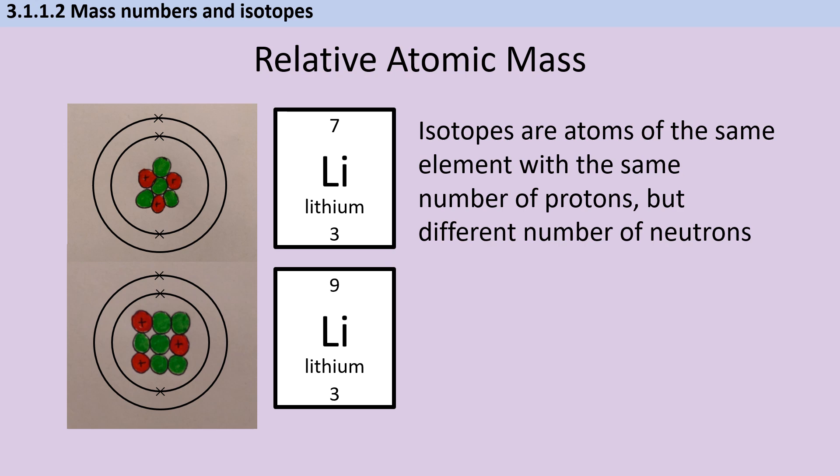Isotopes are atoms of the same element, and since we define an element based on the number of protons it has, that means that isotopes will always have the same number of protons. Since we know that in a neutral, uncharged atom, there are the same number of protons and electrons, that also means that isotopes share an electron configuration. What's different about them is the number of neutrons. This means that their chemical properties will be the same, because chemical properties like how you react with water or acid or oxygen are based on the electron configuration, and this is the same with the two isotopes.